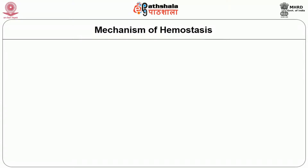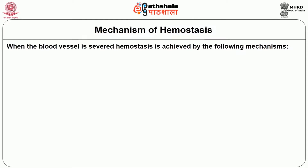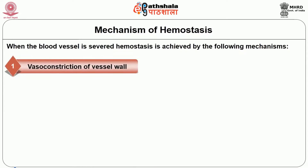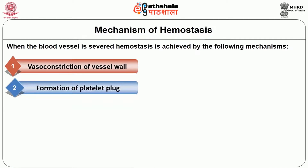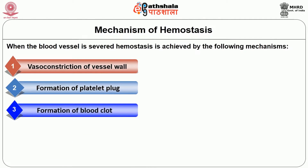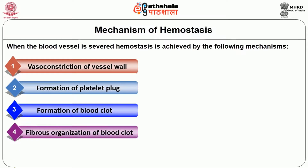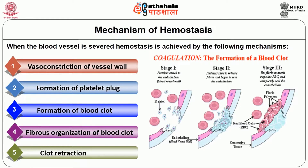Now we will see about the mechanism of hemostasis. Whenever the blood vessel wall is severed, hemostasis is achieved by the following mechanisms: vasoconstriction of the vessel wall, formation of a platelet plug, formation of a blood clot, fibrous organization of the blood clot, and finally, clot retraction. We will now see each of these steps involved in hemostasis one by one.